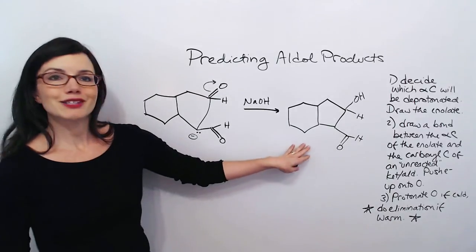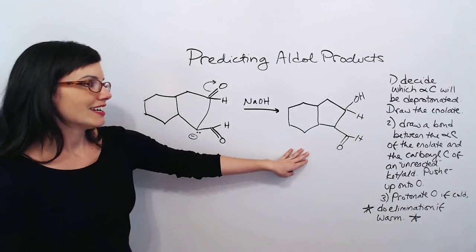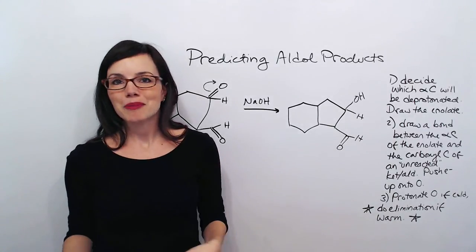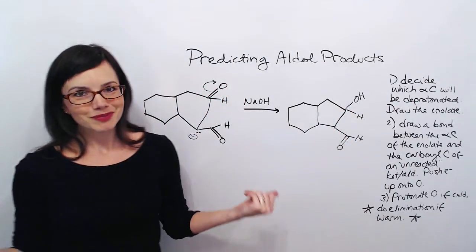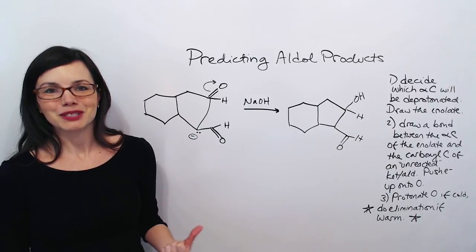So that is our final aldol product. And we can go through our normal steps to confirm that it's correct. O, one, two, three, O. And again, we know we've got a good product.